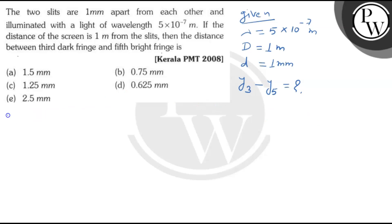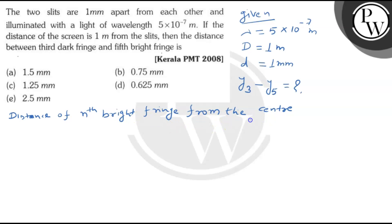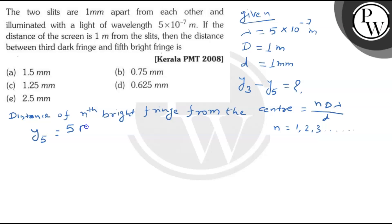The distance of the nth bright fringe from the center is given by: y_n = n·D·λ / d, where n = 1, 2, 3, and so on. So the fifth bright fringe distance is y₅ = 5·D·λ / d.